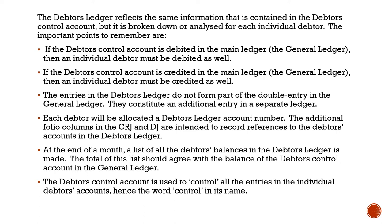In other words, if debtor D1 purchases more stuff on credit, the total of the debtors control account will increase, but also the individual account of debtor D1. So if the general ledger debtors control account changes, then somewhere an individual debtors ledger account must also change. At the end of the month, a list of all debtor balances is made — the total of this list should agree with the balance of the debtors control account in the general ledger. The debtors control account is used to control all entries in the individual debtors accounts, hence the word 'control' in its name.